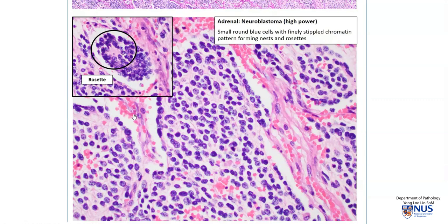There are several important prognostic features for neuroblastoma. One is age — the younger the child, usually the better the prognosis. Stage is also important. The presence of certain molecular aberrations, such as N-Myc amplification, is an unfavorable prognostic factor. The degree of differentiation is also important: the more well-differentiated or mature the tumor, the better the prognosis.